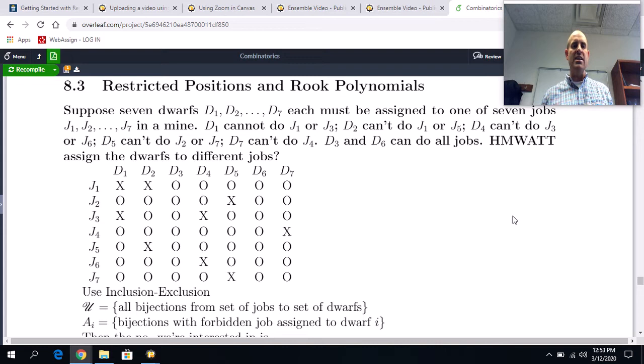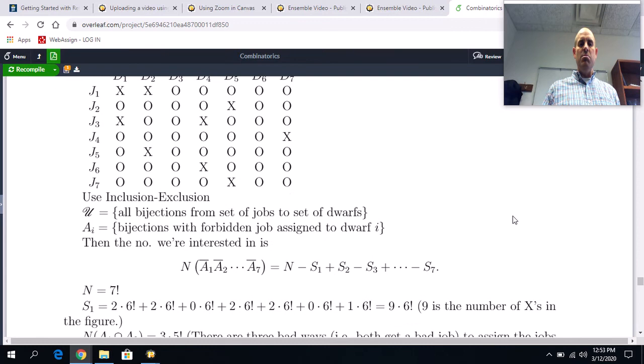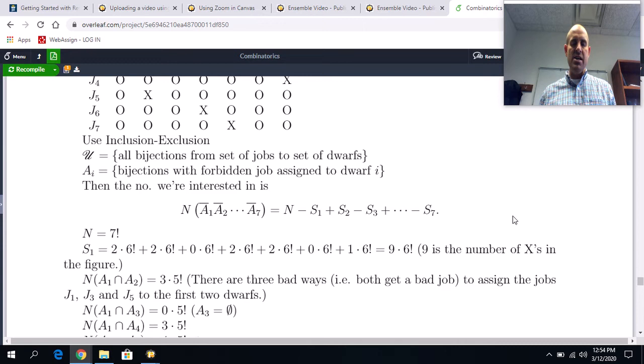And you can also think of this as basically like a chess board, which is the way that we will eventually be thinking about it entirely. The X's will mark as black squares or darkened squares and the O's will just be squares that happen to be light colored. So let's go through here. So remember, the universe was just all bijections from the set of jobs to the set of dwarves.